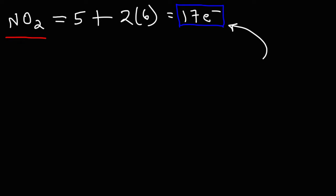Now, the fact that we have an odd number of valence electrons tells us that this molecule is going to be a radical. We're going to have half of a lone pair somewhere. So let's put this together.